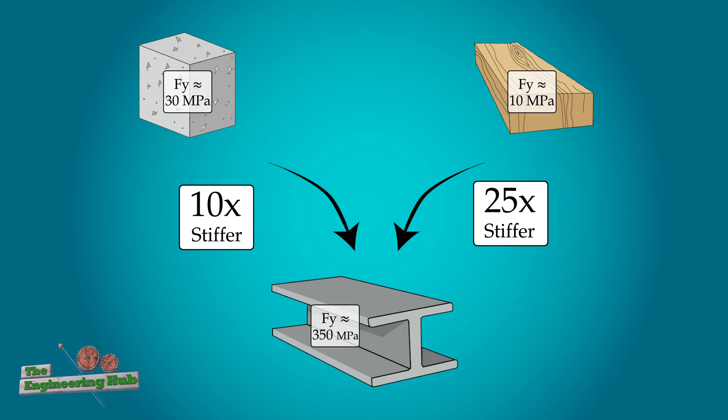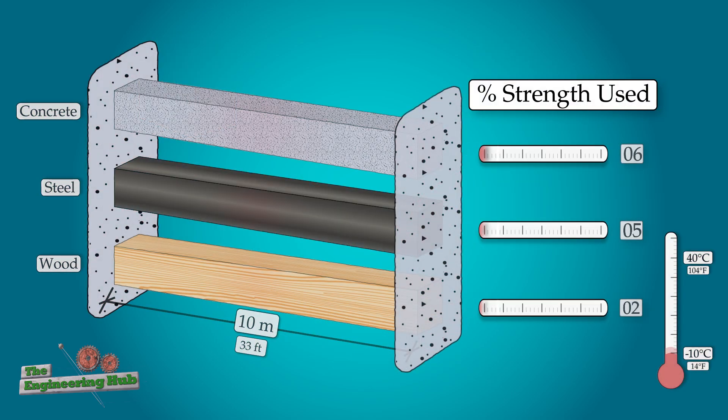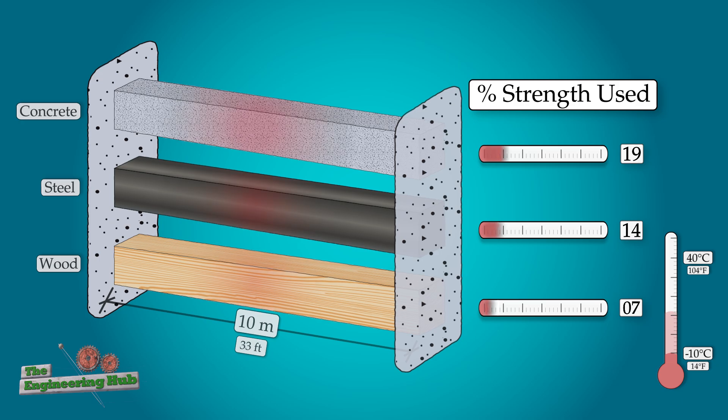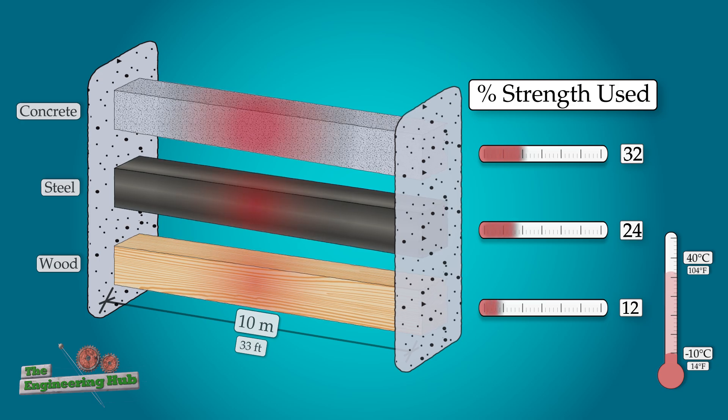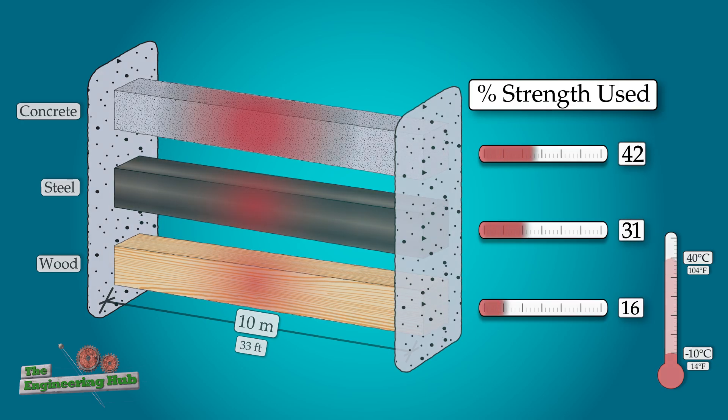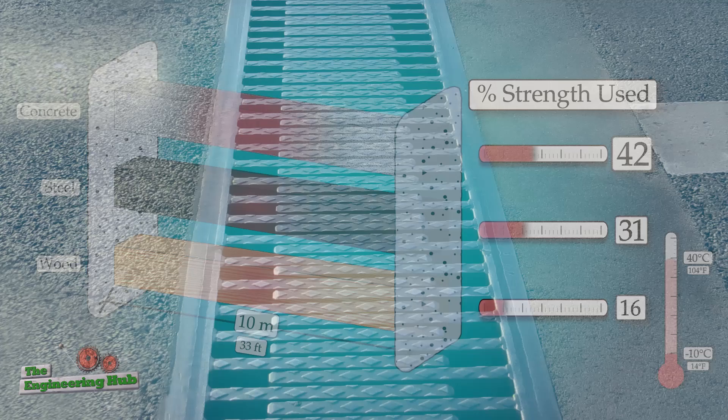However, each of these materials have different strengths as well, so we can check how much of the strength is used up by this constrained thermal stress. As the numbers show, the constrained beams use up a significant portion of the strength, between about 15 and 40%.